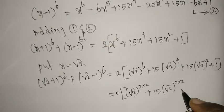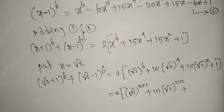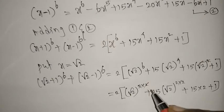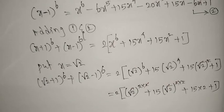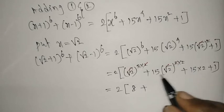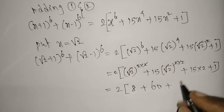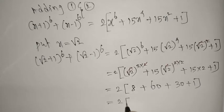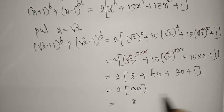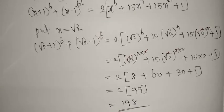Simplifying: (√2)⁶ = 2³ = 8, (√2)⁴ = 2² = 4, (√2)² = 2. So we get 2[8 + 15×4 + 15×2 + 1] = 2[8 + 60 + 30 + 1] = 2 × 99 = 198. The required answer is 198.